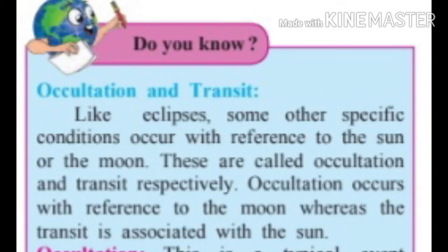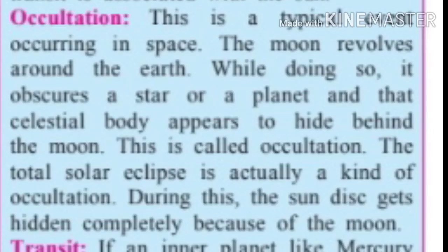Do you know about occultation and transit? Like eclipses, some other specific conditions occur with reference to the sun or the moon — these are called occultations and transits respectively. Occultation occurs with reference to the moon, whereas transit is associated with the sun. Occultation is a typical event occurring in space: as the moon revolves around the earth, a star or a planet appears to hide behind the moon. This is called occultation.